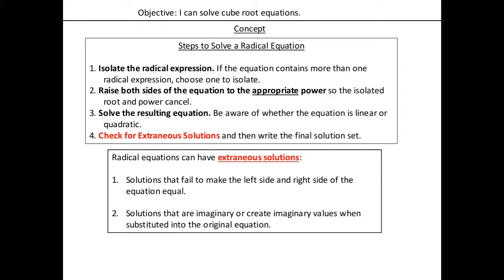Here are the steps to solve a radical equation — the same as for the square root, with one difference in step two. Step one: isolate the radical expression — get rid of anything outside the cube root first. Step two is the only real difference: raise both sides to the appropriate power. To undo a cube root, instead of squaring both sides, we have to cube both sides. Step three: solve whatever is left over on the inside of the radical.